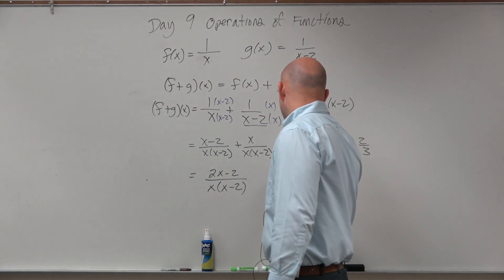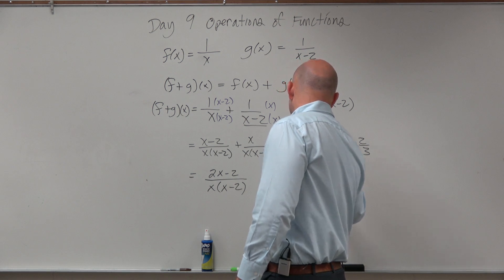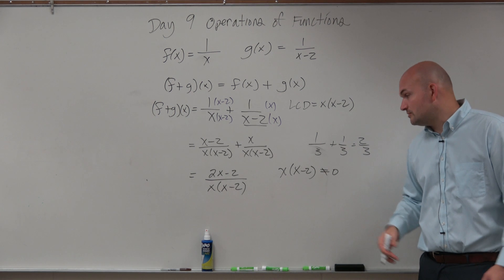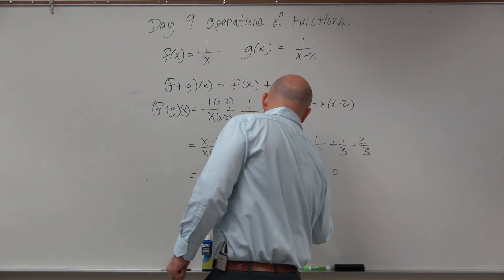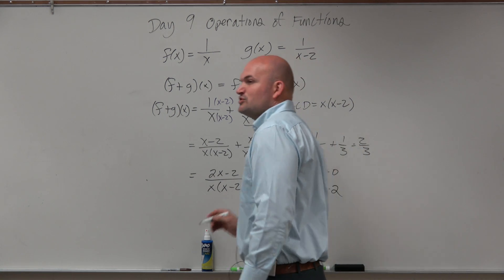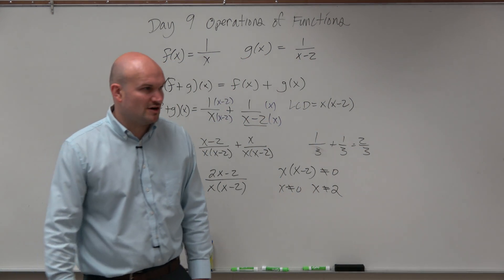So when we're finding our domain, we've got to say, alright, what's going to make our denominator equal to 0? Or we don't want it equal to 0, so we do not equal. So we know that x cannot equal 0, and x cannot equal 2. I am short-cutting some of my algebra because we've already gone over some of that.